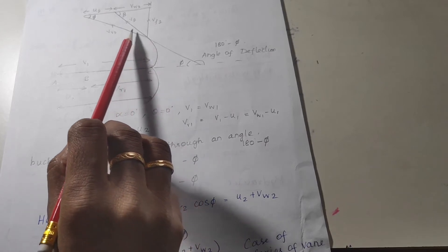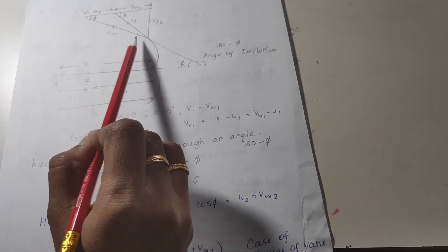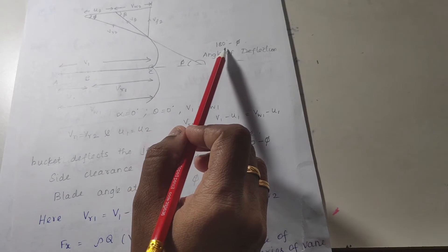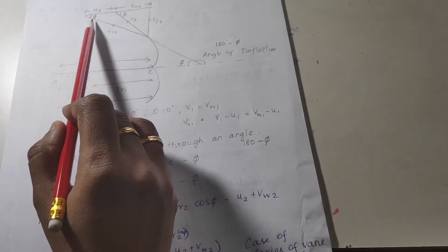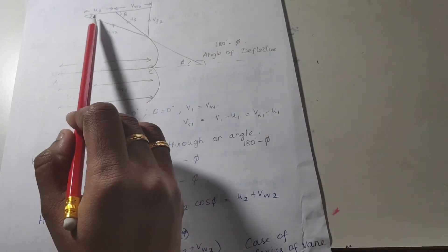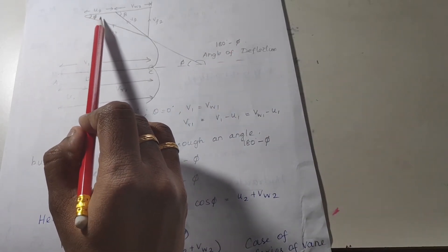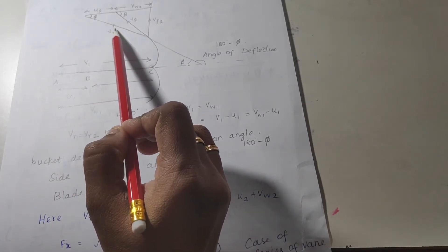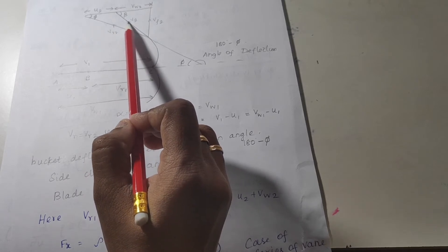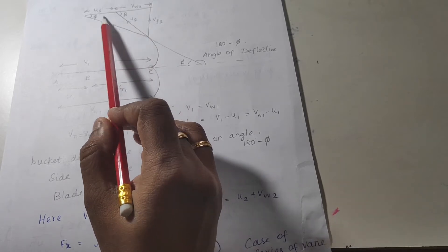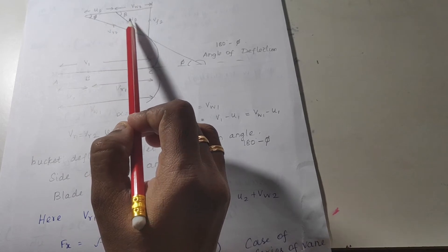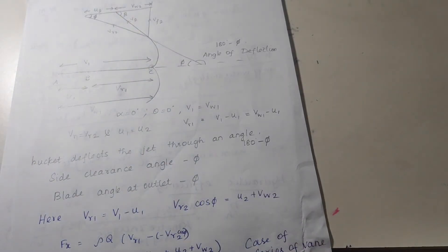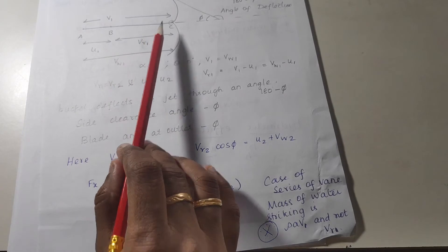After striking the vane, the water comes out with velocity vr2. The jet is deflected by an angle of 180 minus phi. So this angle will be phi. The vane is also moving with u2. vr2 is the relative velocity at the outlet, from which we can find the absolute velocity at the outlet. The vertical component of the absolute velocity is vf2 and its horizontal component is vw2.